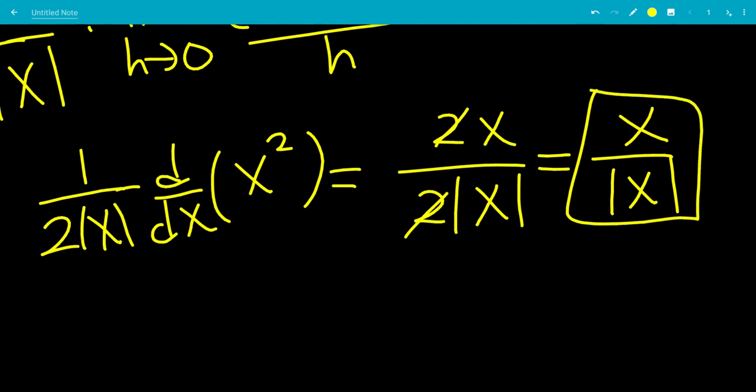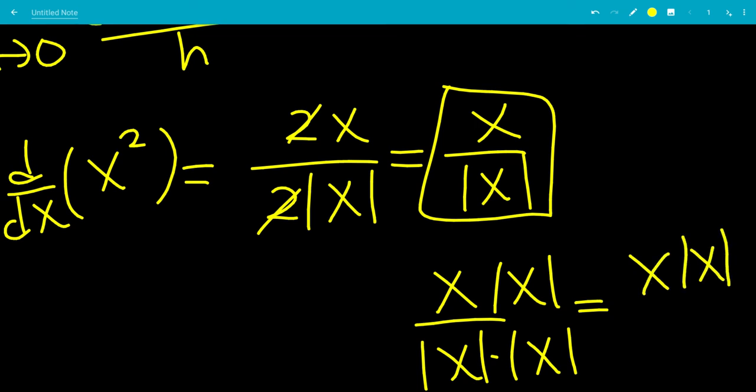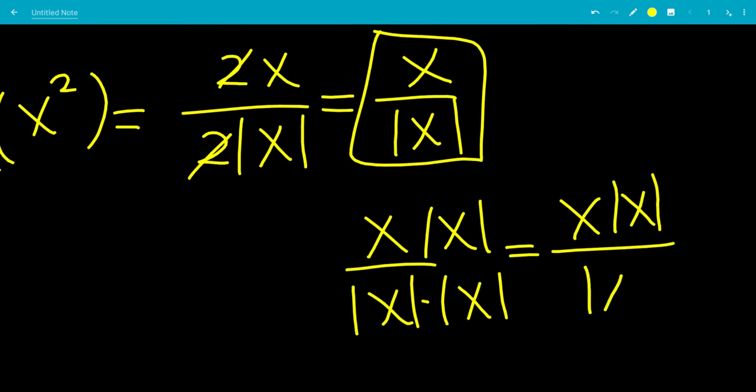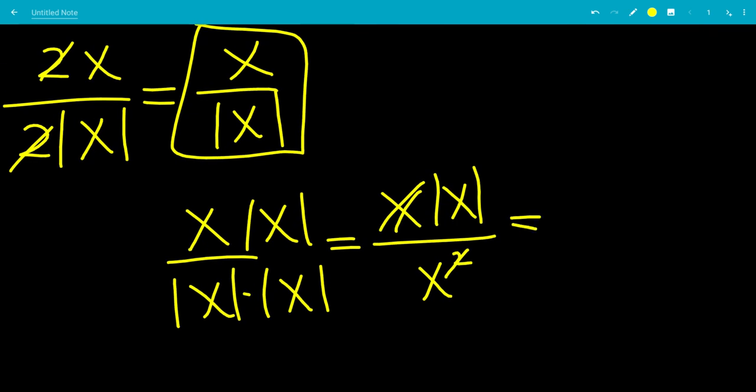But not every resource shows it the same way. If you want it to look the other way, you can multiply top and bottom by absolute value of x. This will be x times absolute value of x. As we said before, the absolute value of x quantity squared is the same thing as just x squared because when you square something it's always positive. x and x will cancel one of the x's. This will leave us with the absolute value of x over x.